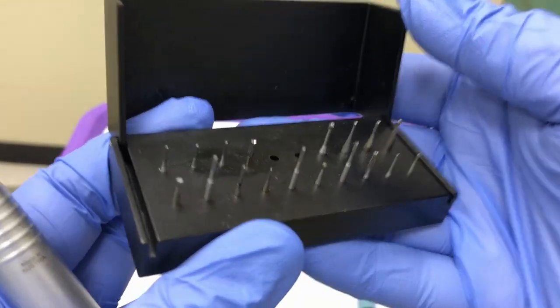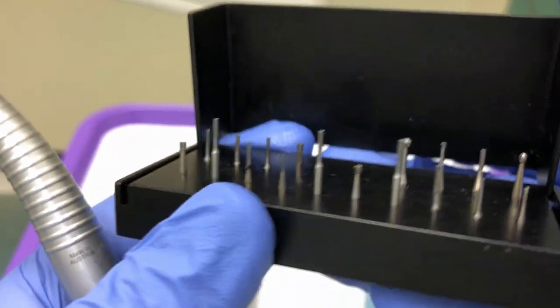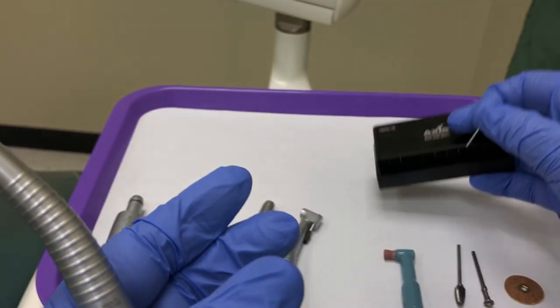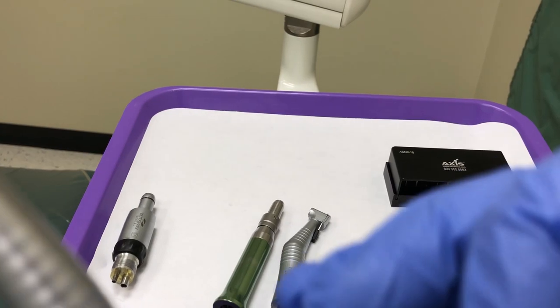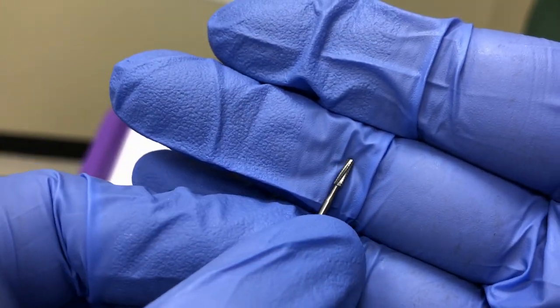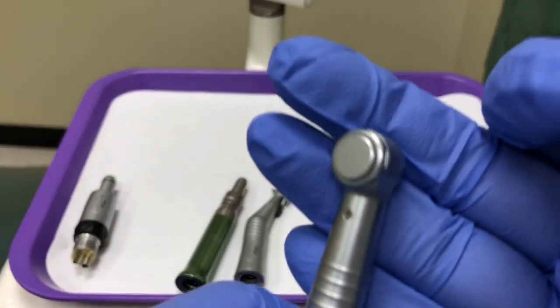For this example, we're going to select a 702 burr, which is a tapered fissure crosscut burr. An up-close look at the burr shows that the tip is tapered and the flutes have notches in them, which are your crosscuts.